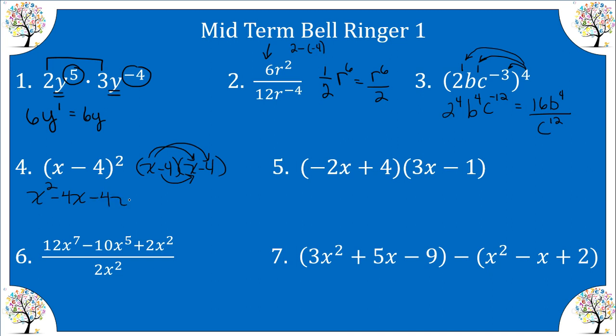and now distribute the negative four. We get negative four X plus 16. Combine the two middle terms, and we have X squared minus eight X plus 16. So we have a quadratic trinomial.